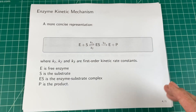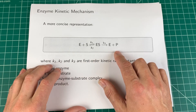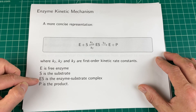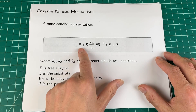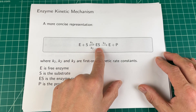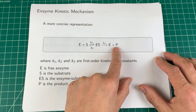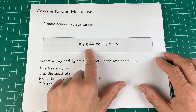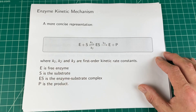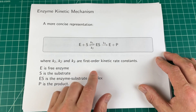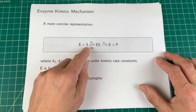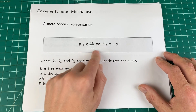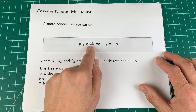This is a pictorial diagram. We can make it more concise: enzyme plus substrate gives enzyme-substrate complex, which breaks down to form enzyme and product. Note this reaction is effectively irreversible. K1, K2, and K3 are the first-order kinetic rate constants. In most books you'll find these labeled K1, K-1, then K2, but I think it's easier to just label them 1, 2, 3.